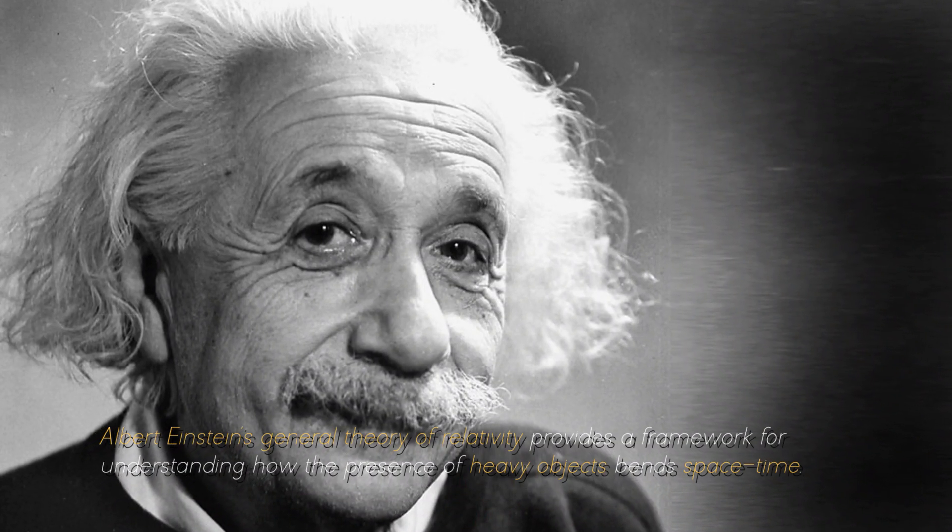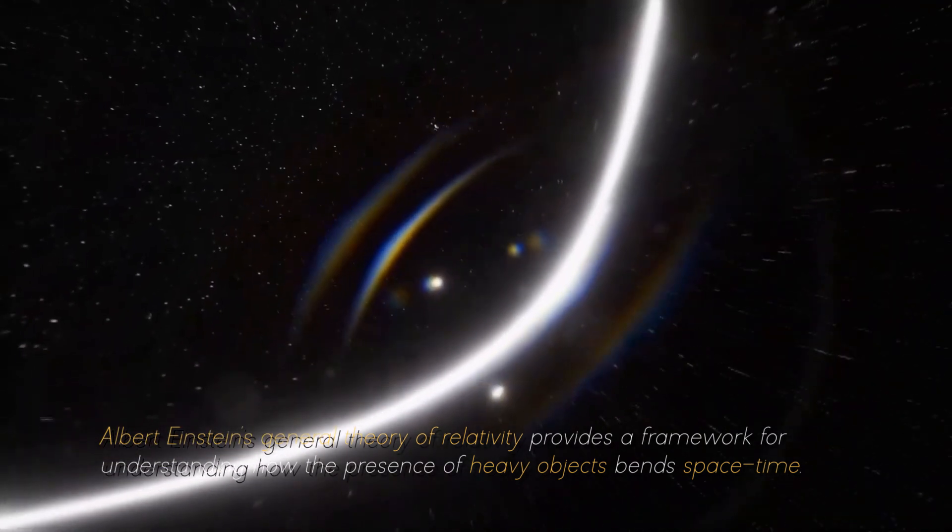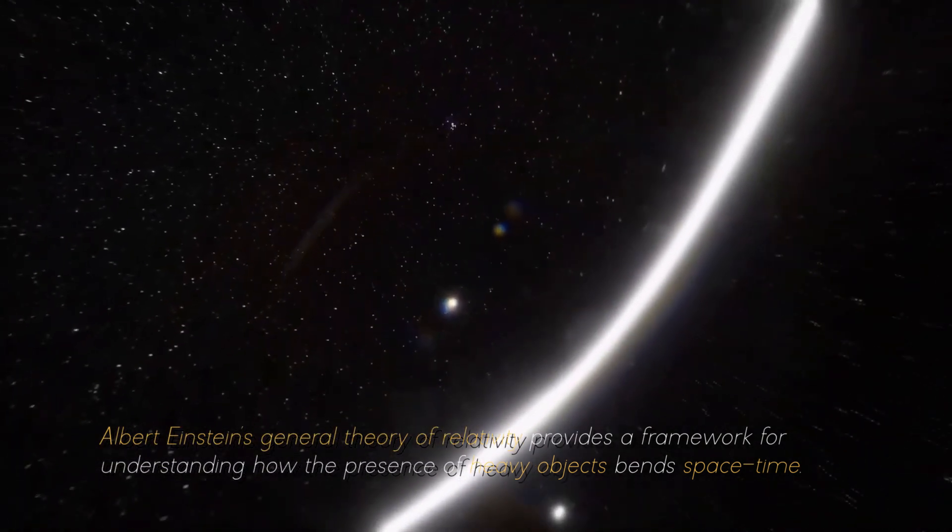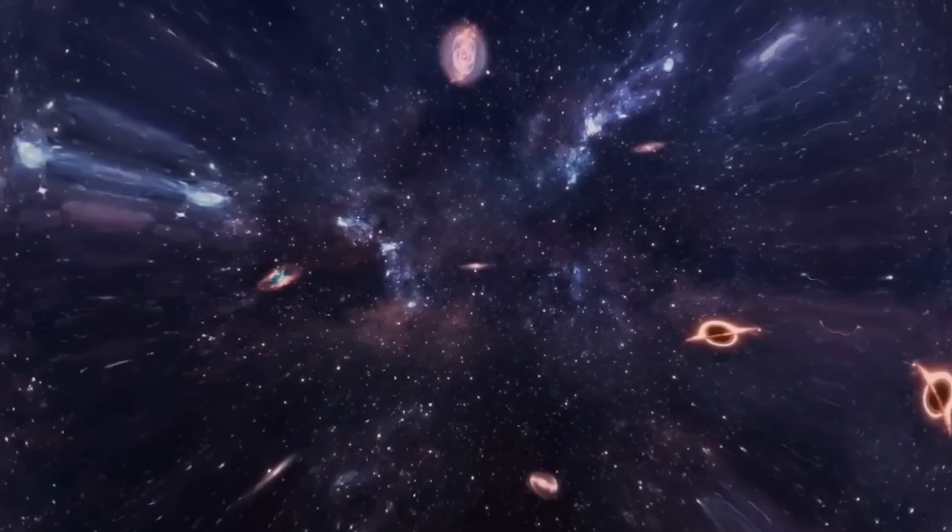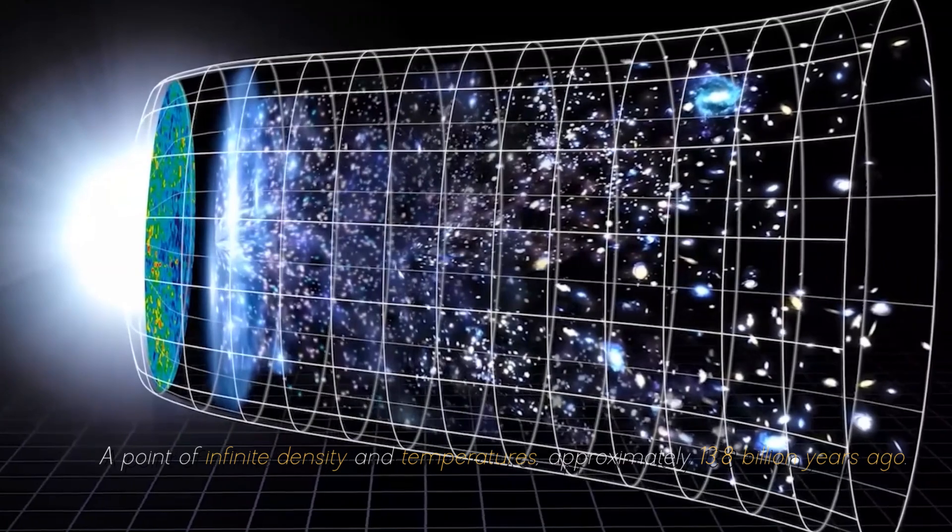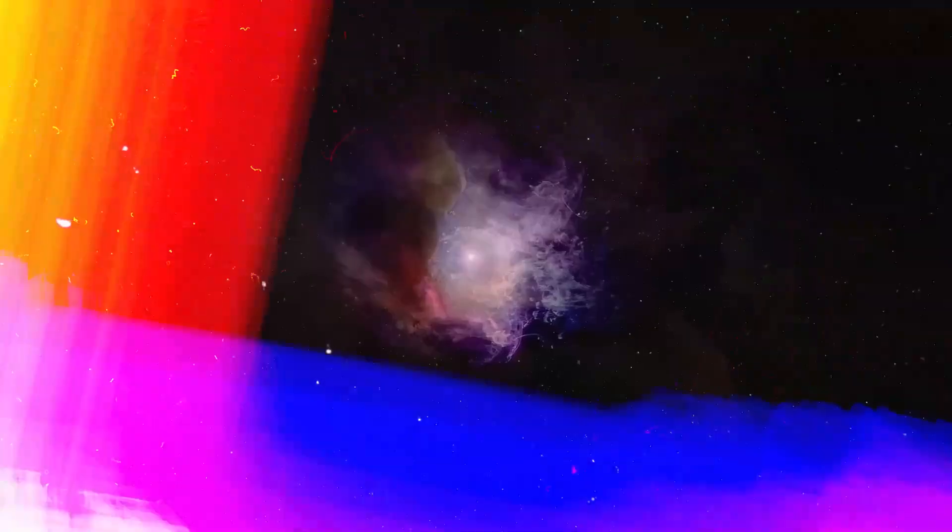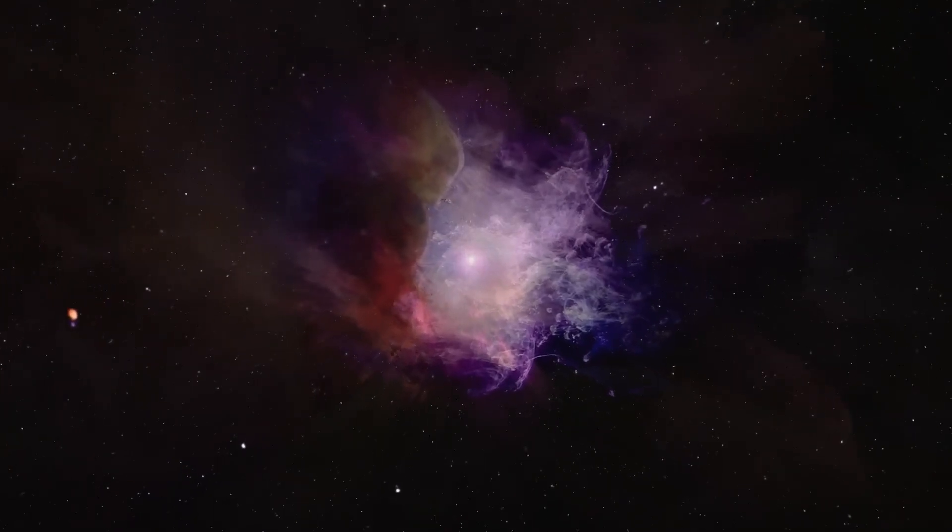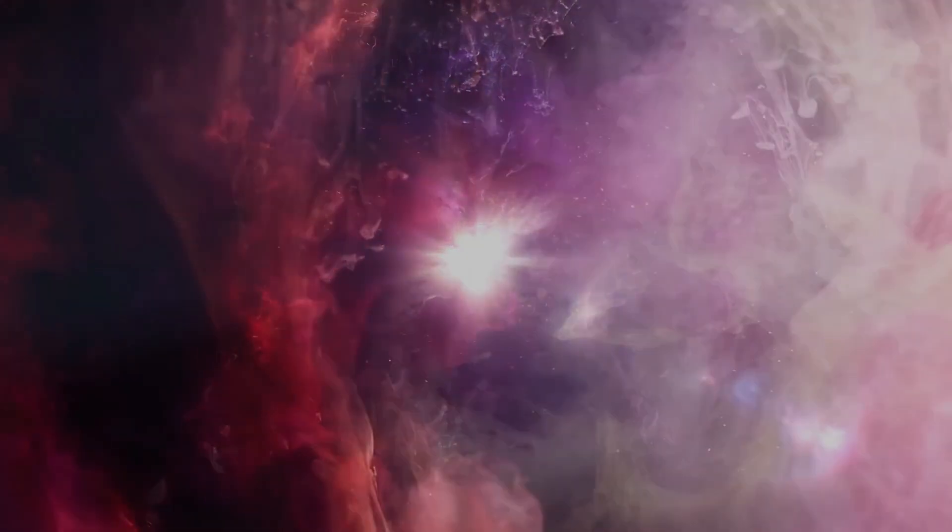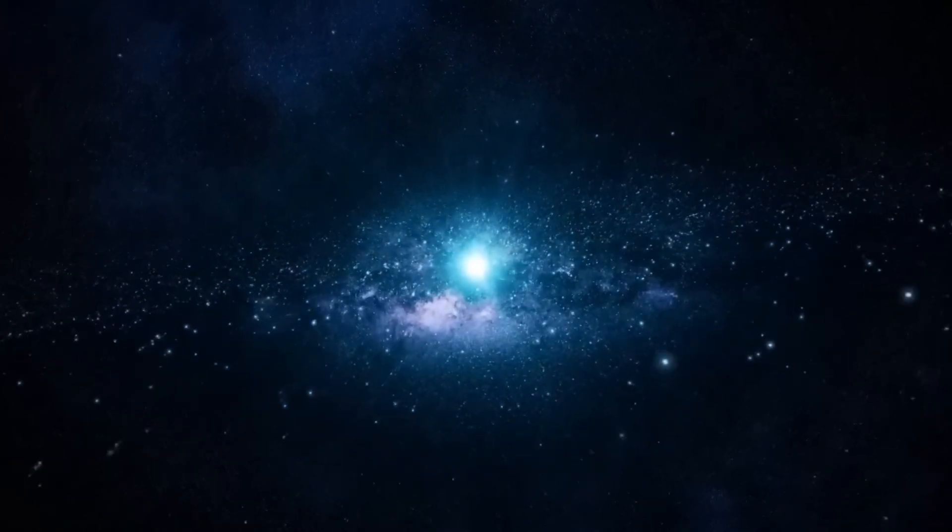Albert Einstein's general theory of relativity provides a framework for understanding how the presence of heavy objects bent space-time. According to this theory, the cosmos originated as a singularity, a point of infinite density and temperatures approximately 13.8 billion years ago. According to the Big Bang theory, all matter and energy were compressed into an extremely small, hot region. At this point, the cosmos began to expand with a rapid and violent event known as the Big Bang.